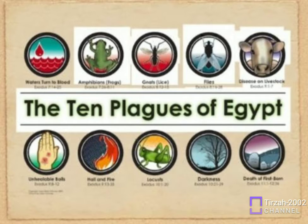Livestock — All the Egyptians' livestock die, but none of Israel's are even sick. The result: Pharaoh still refuses to let the people go. Exodus 9:1-7. Plague 6.